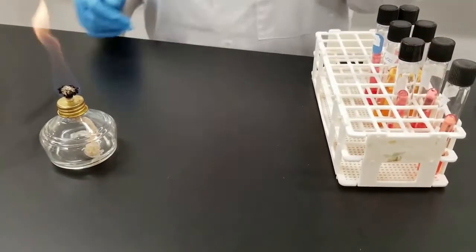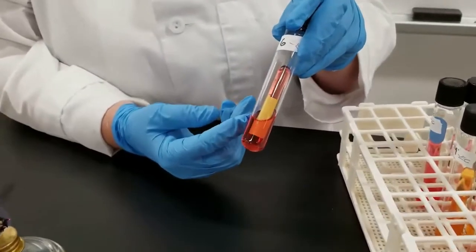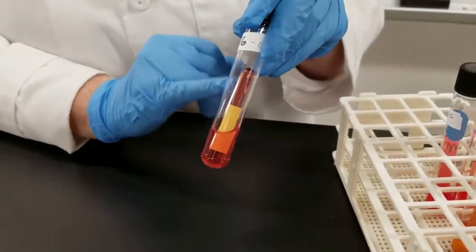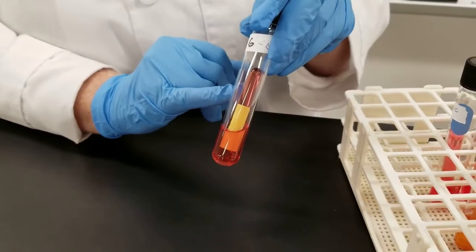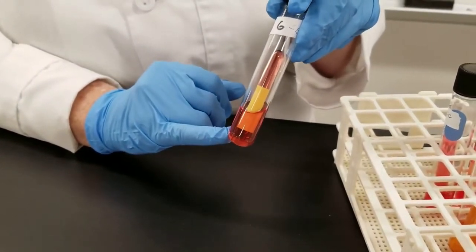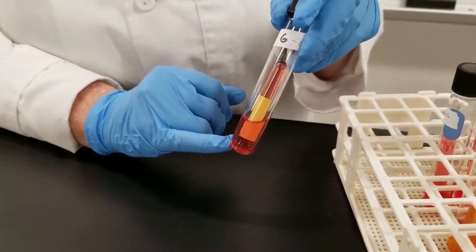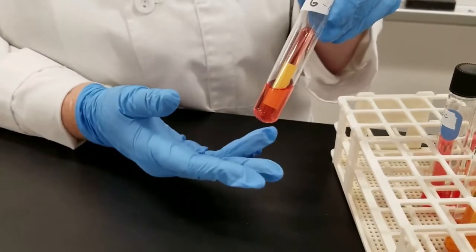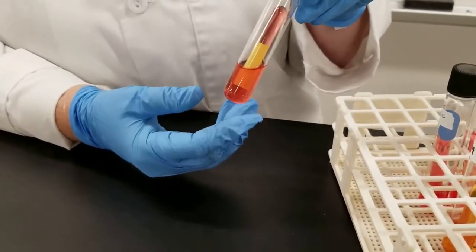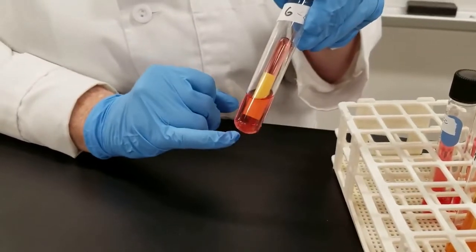In these tubes we have in a broth solution the sugar and then we have these inverted tubes, often also known as a Durham tube. What we're going to do is inoculate this medium with the bacterial culture. Some will not be able to use the particular sugar in question. Most things will be able to use glucose but some of the others, some organisms can use them, some cannot.